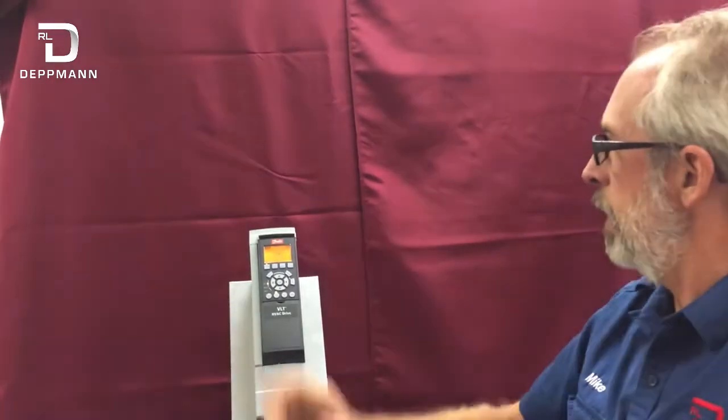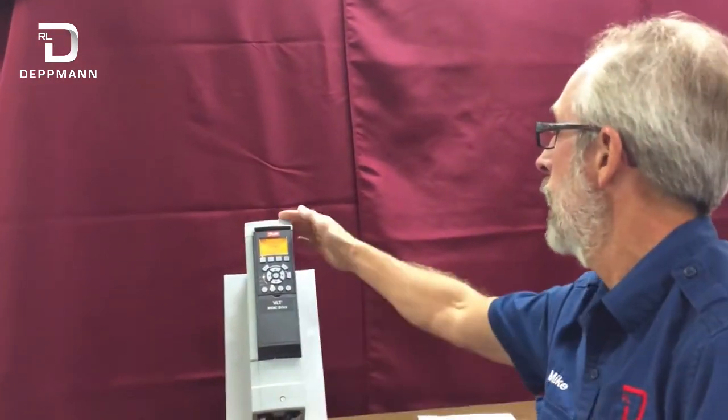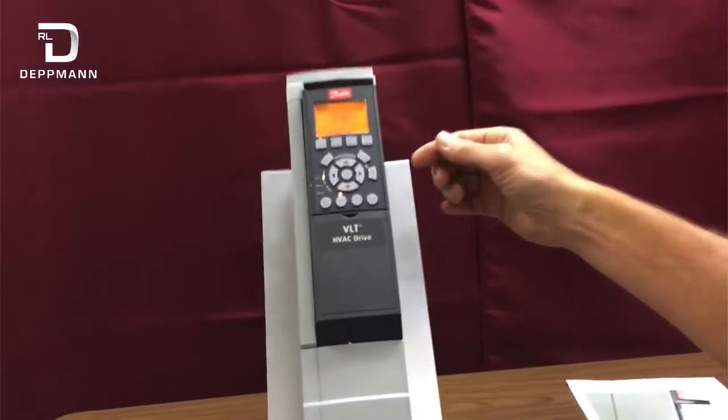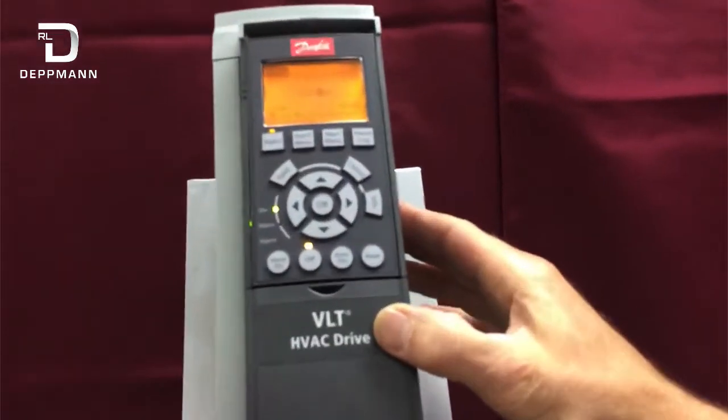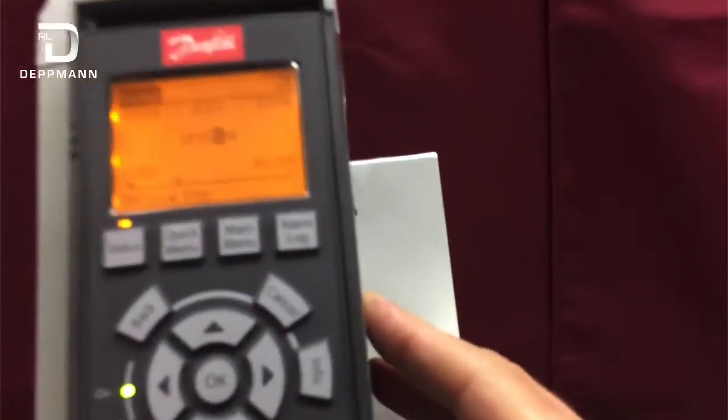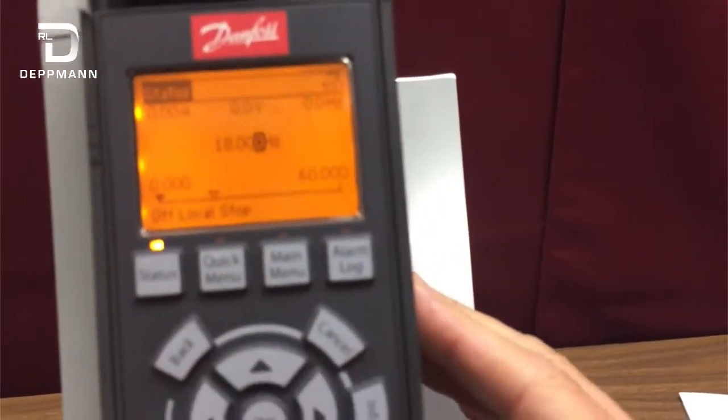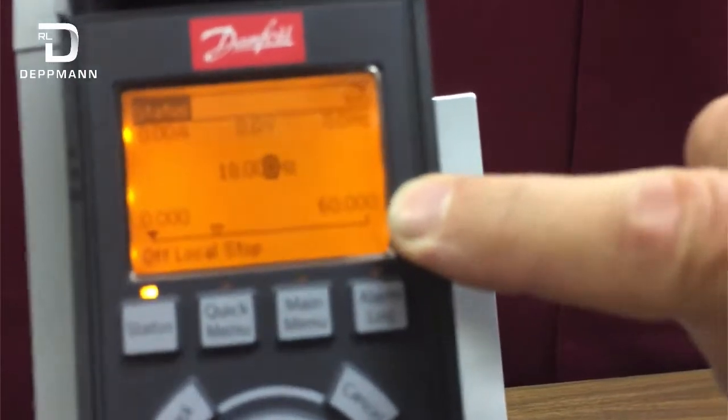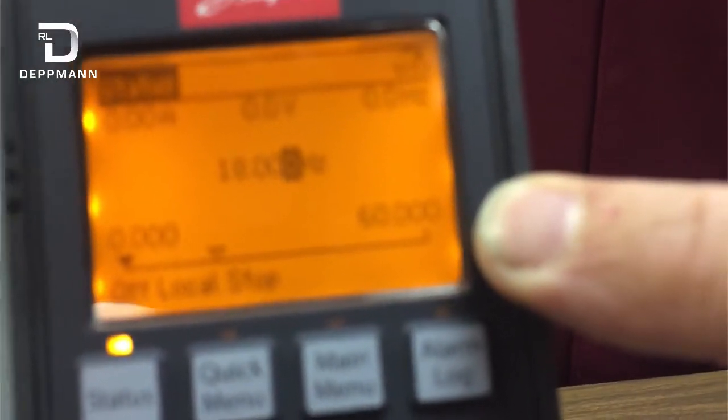Alright, so let's get started. Right here we have a Technologic Danfoss drive, and we want to change the speed that we're going to be able to operate the motor at. You can see right now the upper limit right here is at 60 Hz.